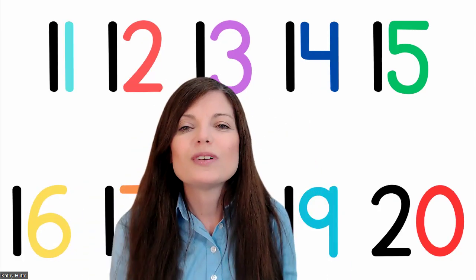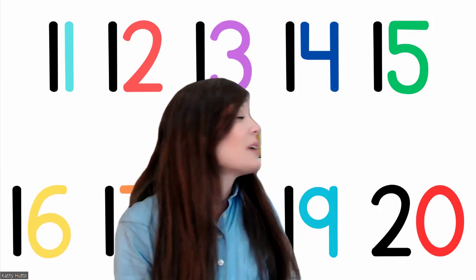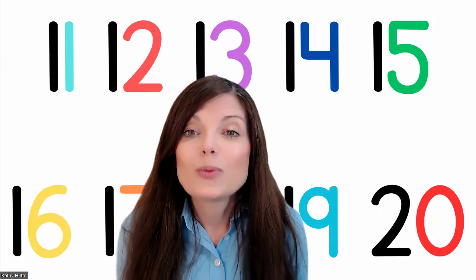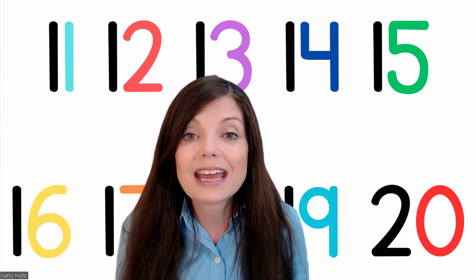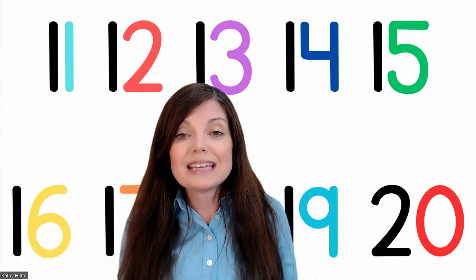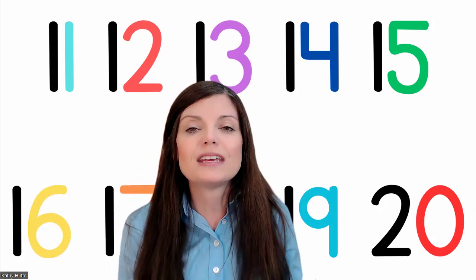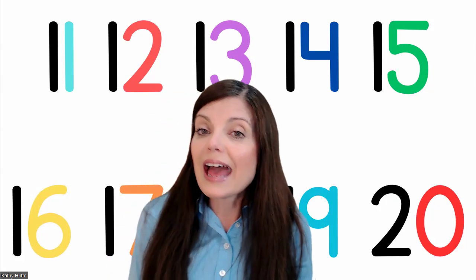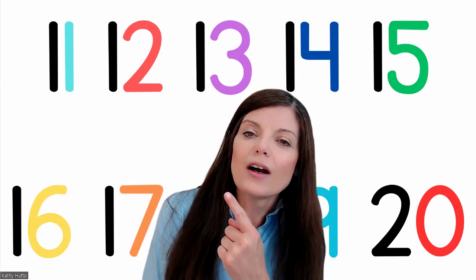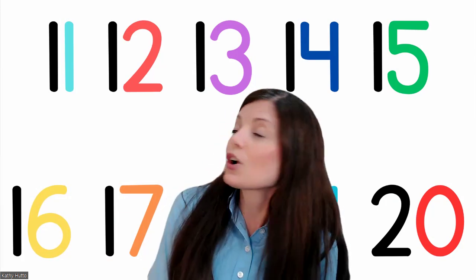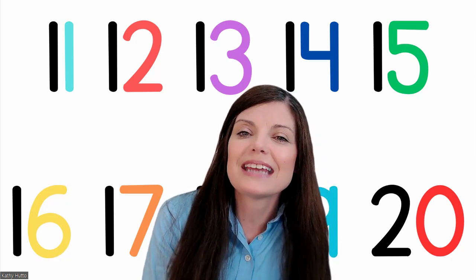And then we'll move on to the teens. Now I call these the teen numbers because there's a 1 in the front. When you are 13 and up, you're called a teen, a teenager. And these are called the teen numbers because you're going to hear, after most of these, a teen. 11, 11 doesn't have a teen. Or 12, but then you start with 13, 14. You see, you start with that teen at the end.